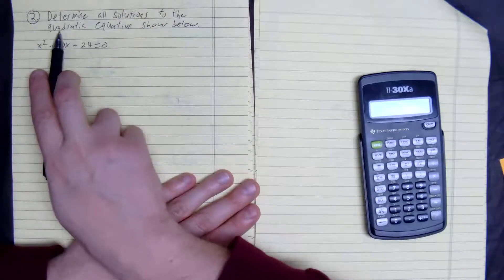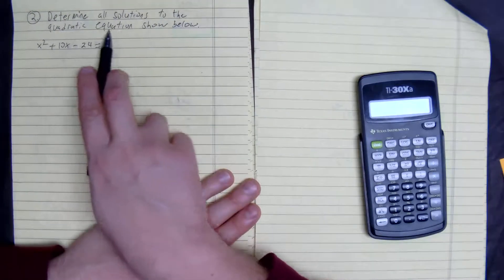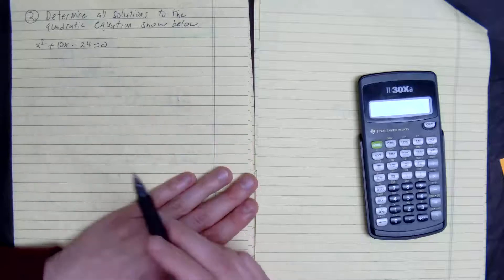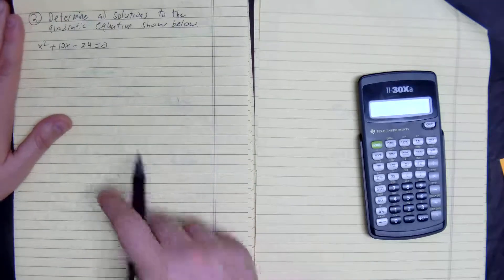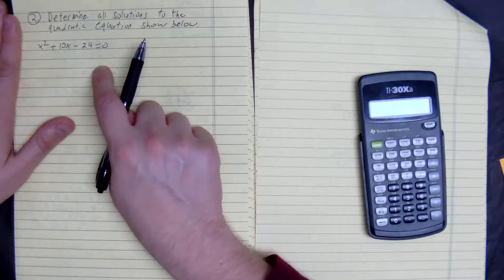We're looking at number 2. Number 2 says determine all solutions to the quadratic equation shown below. All right, so what we have here, we're trying to find the solution set.